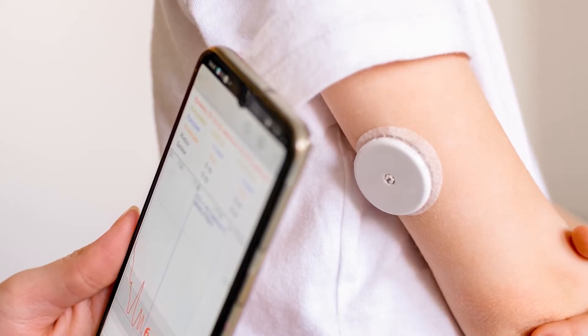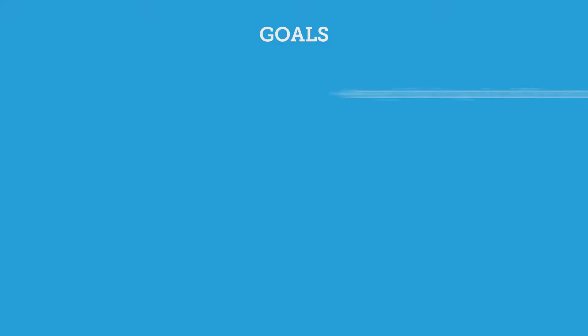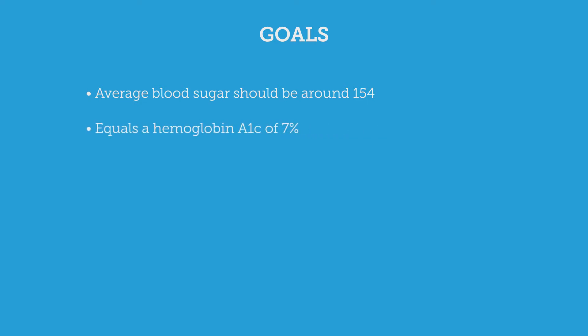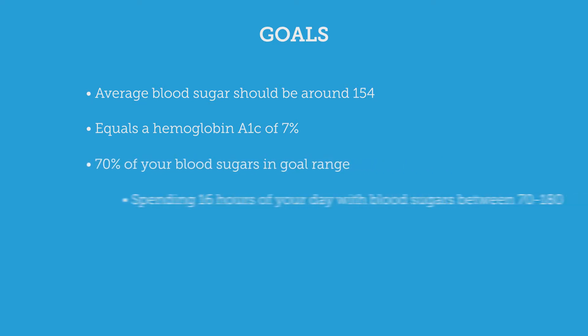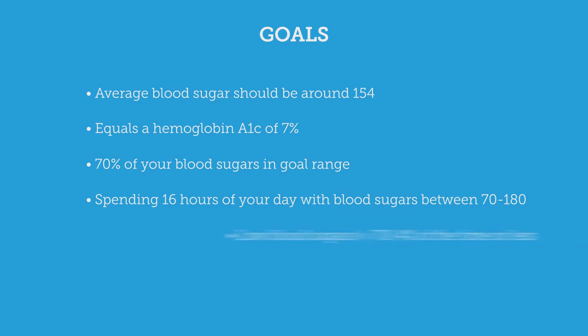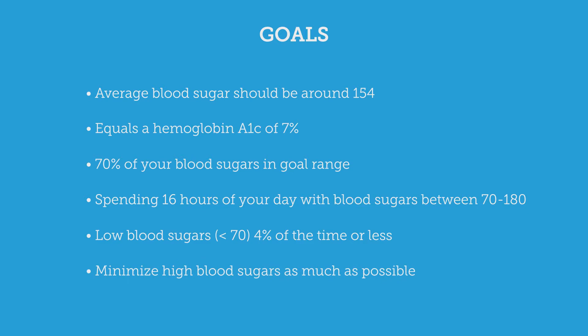You also want to know what you're looking for and what your goals are. The goal for your average blood sugar should be about 154, which would equal a hemoglobin A1c of seven percent. When looking at your blood sugars, you want to see about 70 percent of them in goal range — meaning you're spending 16 hours of your day between 70 to 180. You want low blood sugars, meaning less than 70, to occur four percent of the time or less, and minimize high blood sugars as much as possible. During the day your blood sugar goal is about 90 to 150, and first thing in the morning about 90 to 130.